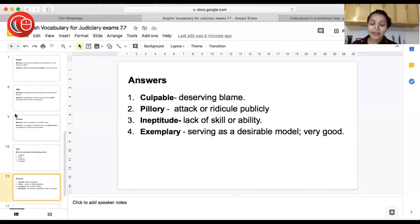Okay, I hope everybody of you have written the answers. So now it's time for the answers. The first word is culpable. Culpable means deserving blame. Something which you have done for which you are to be punished. You are to be blamed. That is called culpable. The second word is pillory. Attack or ridicule publicly. When you are attacking somebody's image publicly, that is called pillory.